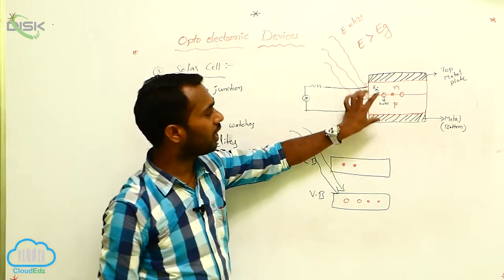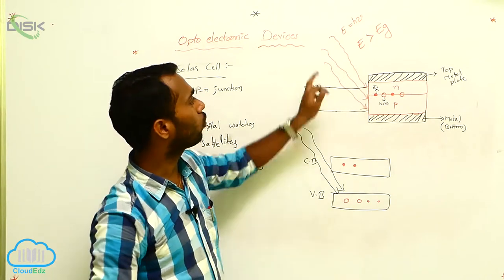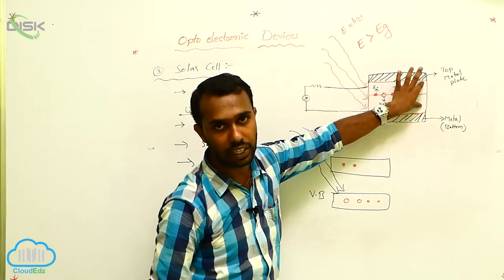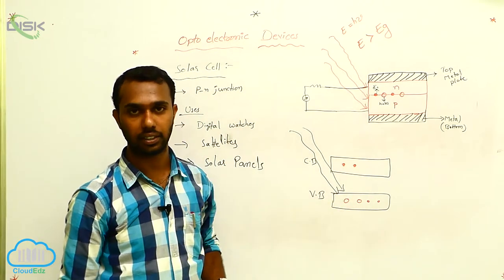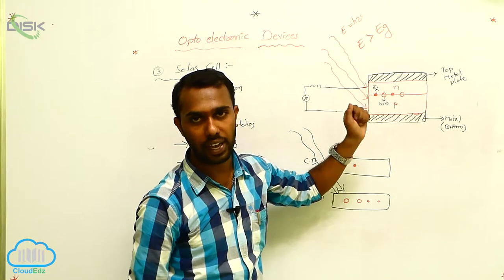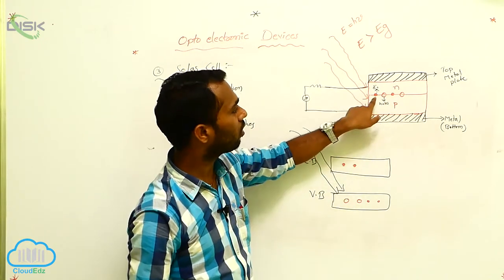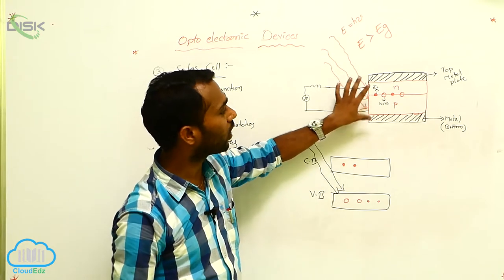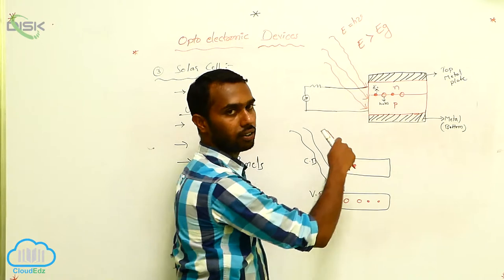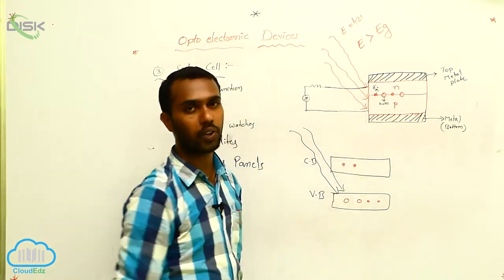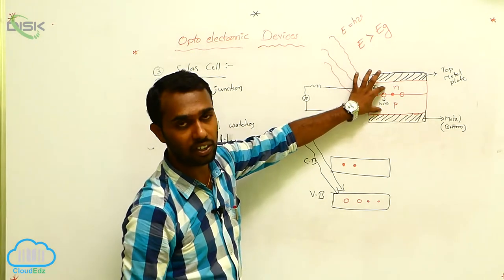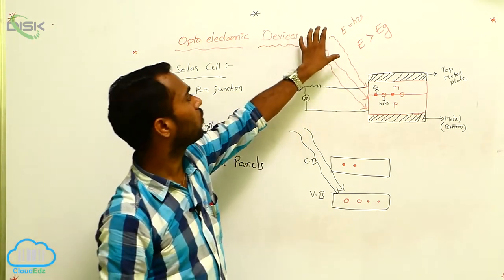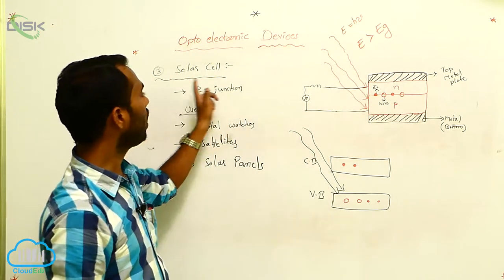A solar cell is nothing but a PN junction diode. Whenever solar energy greater than the energy gap is incident on the PN junction, electron-hole pairs are generated. Electrons move toward the N region and holes toward the P region, resulting in two opposite terminals — negative at N and positive at P. EMF develops, and when connected to a resistor, current flows. In this way we convert solar energy into electrical energy.